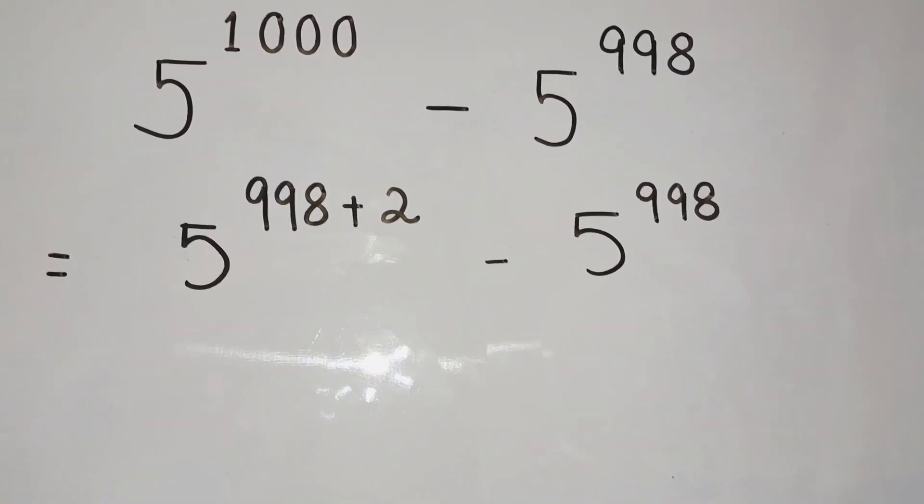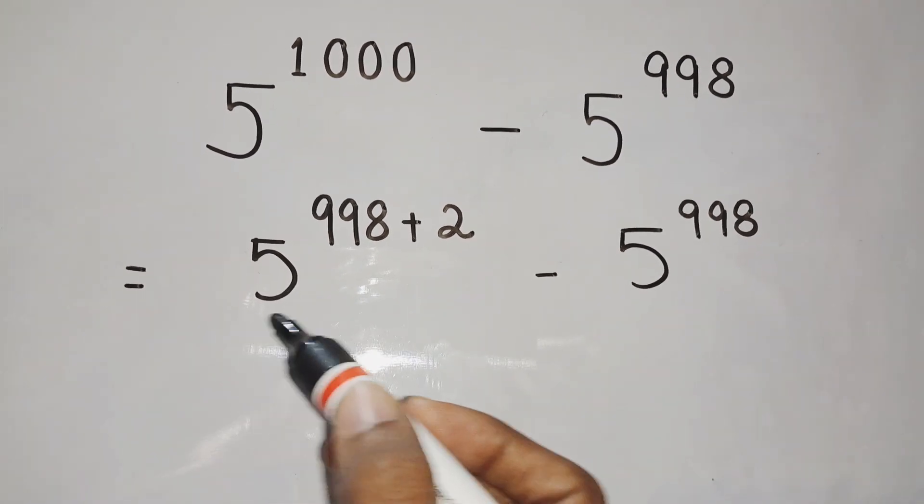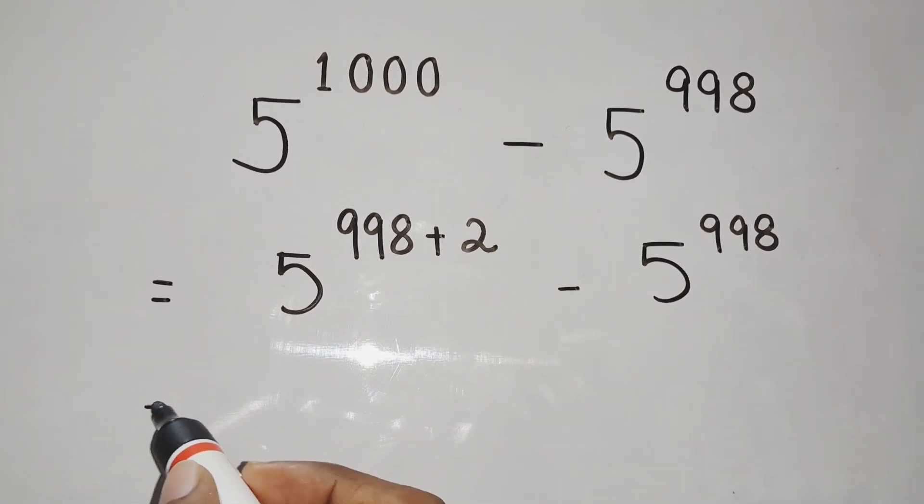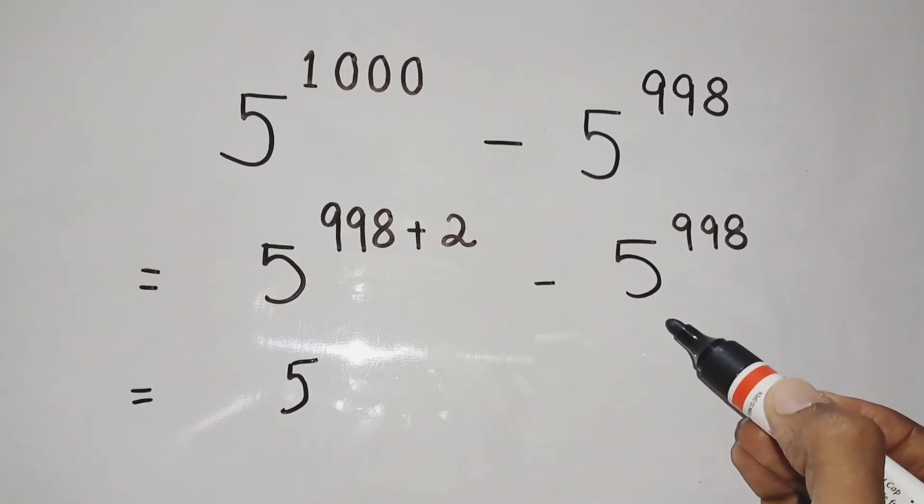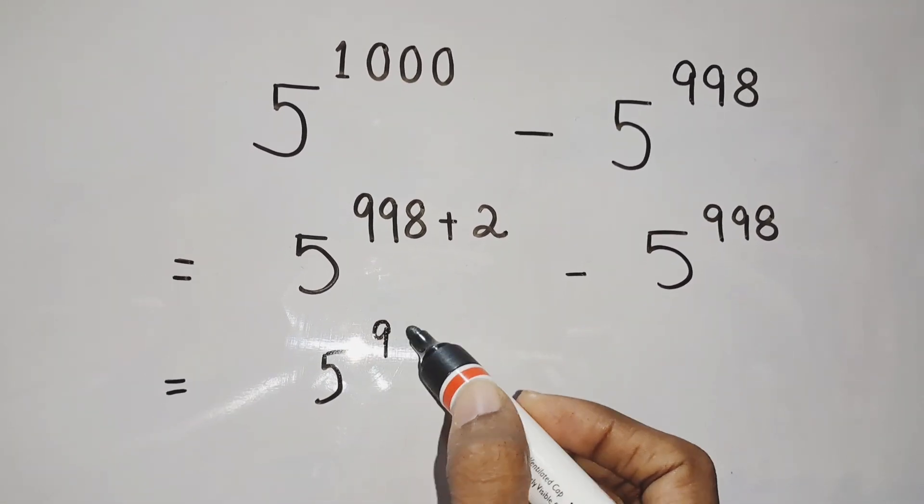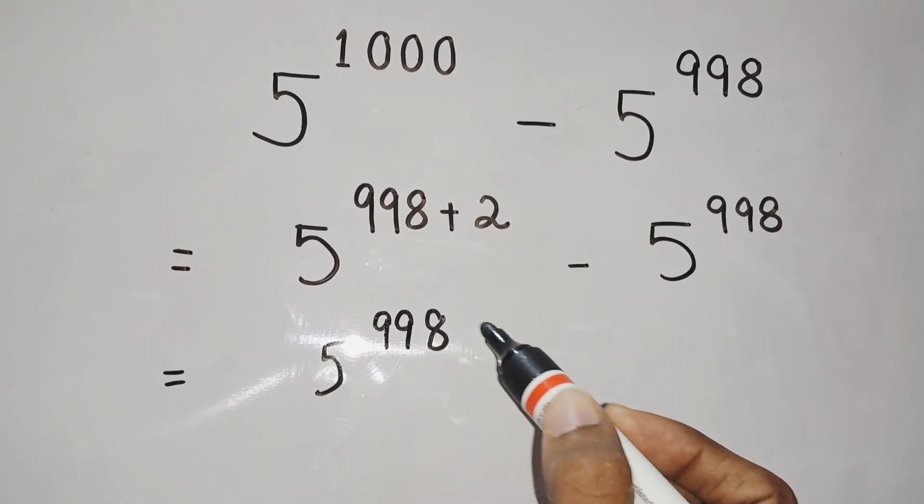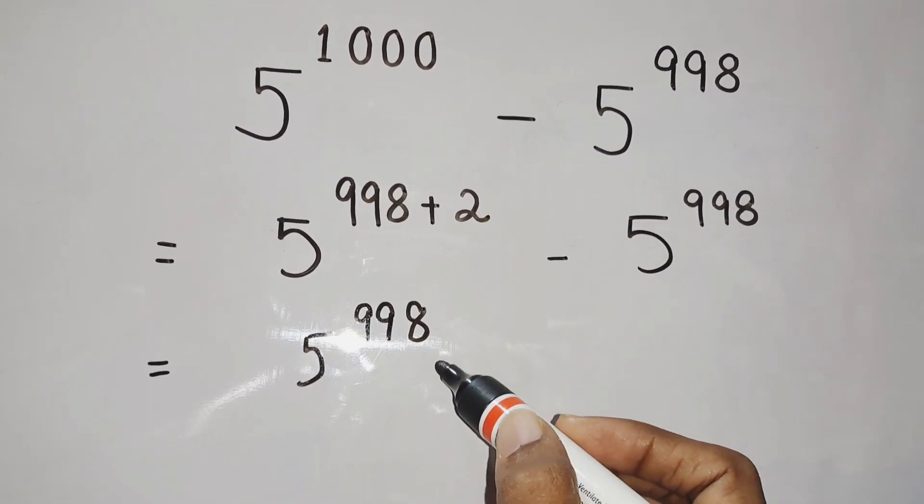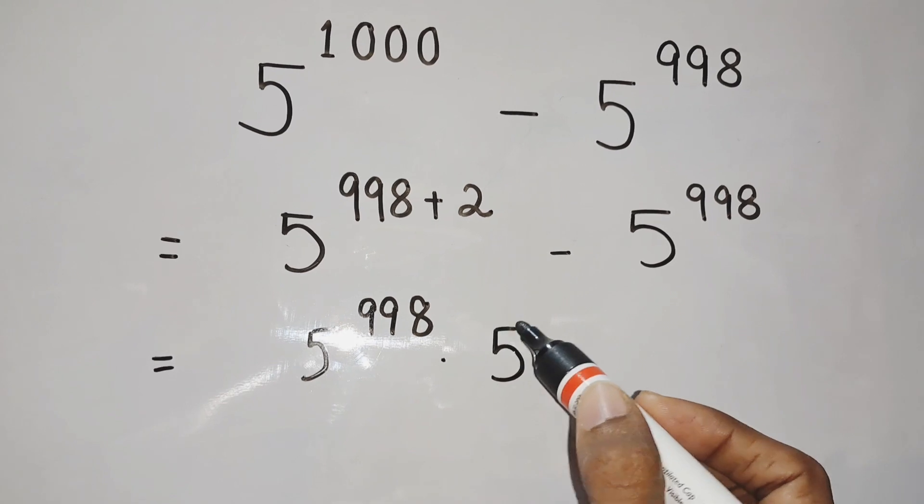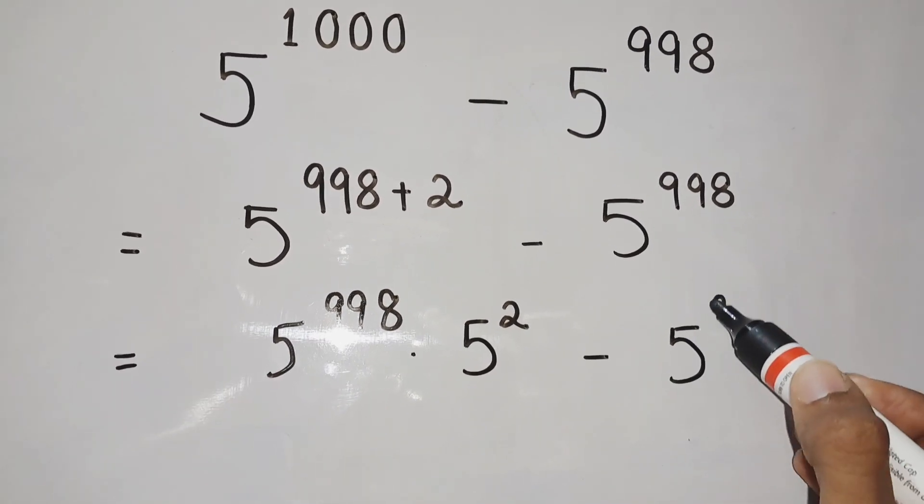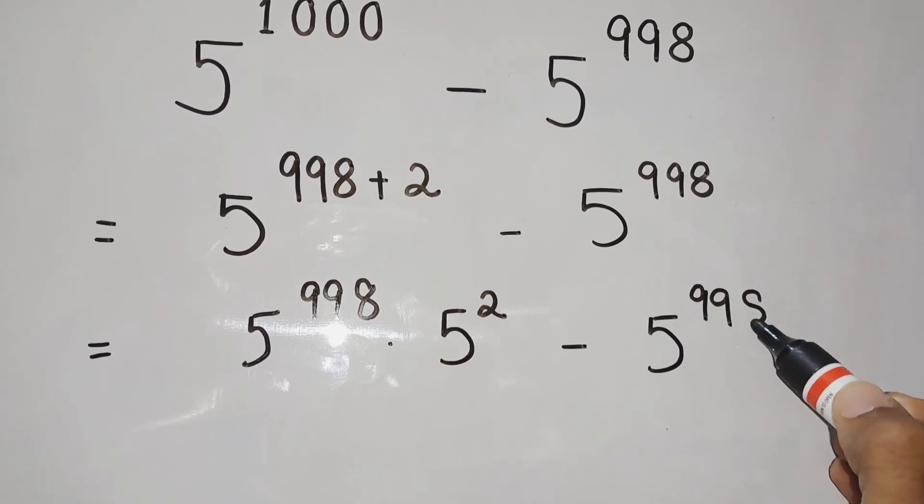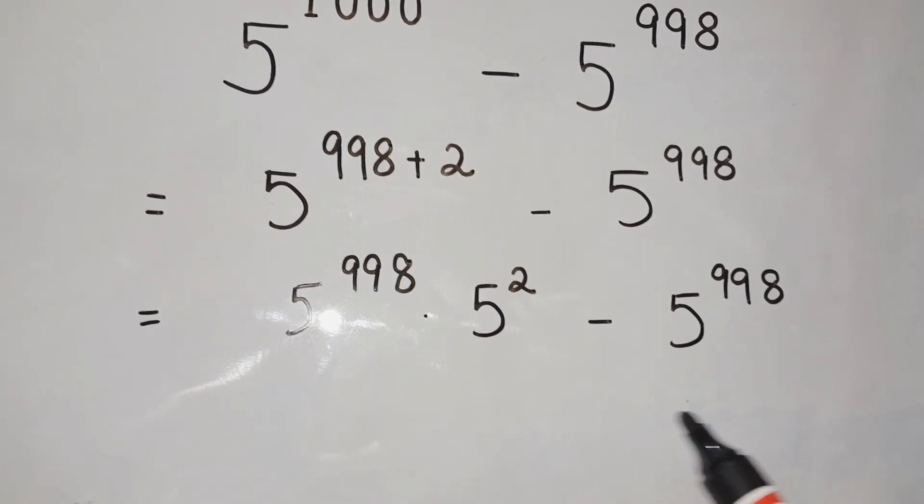Next step, what we can do is we can take 5 to the power 998 common from both of these terms. But before that, we can write 5 to the power 998 plus 2 as 5 to the power 998 into 5 to the power 2 minus 5 to the power 998.